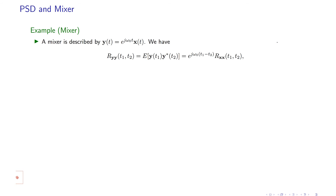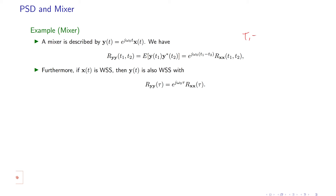Writing this out, we see that R_yy becomes equal to R_xx(τ) times e to the power of j omega naught τ. So if you mix the signal, the autocorrelation function of the output equals the autocorrelation function of the input with its frequency upconverted or downconverted.